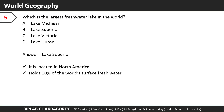Which is the largest freshwater lake in the world? The answer is Lake Superior. Lake Superior is located in Northern America and it holds 10% of the world's surface freshwater.